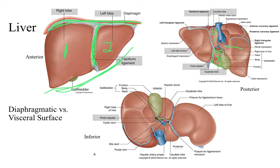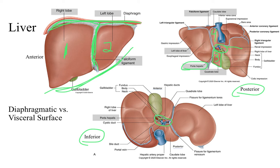Another structure to be familiar with is the porta hepatis, visible on the posterior and inferior aspect of the liver. The porta hepatis is very similar to what we saw with the root of the lung — where all the bronchi, arteries, veins, and nerves go into or out of the lungs. Here it is a group of artery, vein, and bile ducts that are coming out of or going into the liver. That is known as the porta hepatis.